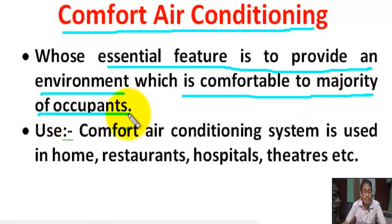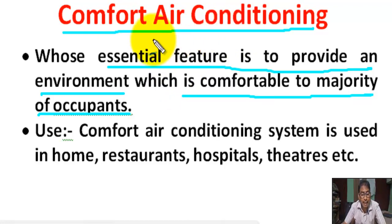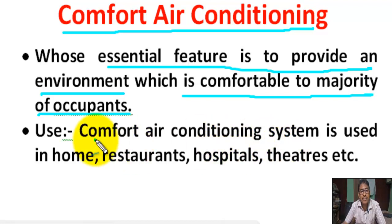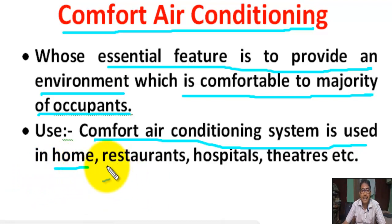Its essential feature is to provide an environment which is comfortable to the majority of occupants. The main parameters controlled are temperature, humidity, air movement, etc., as per requirement. Comfort air conditioning systems are used in homes, restaurants, hospitals, theaters, etc.